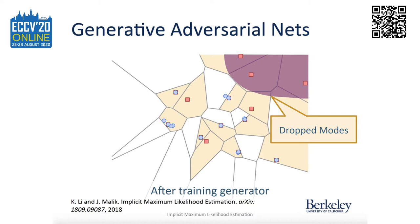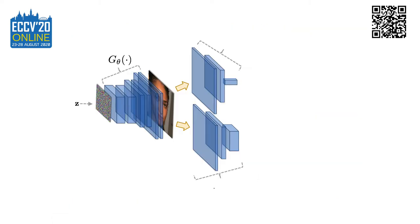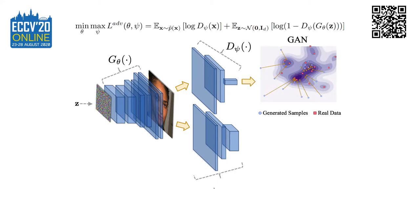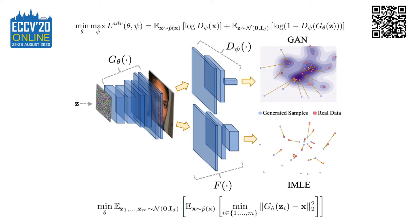This leads to generation bias against minority attributes. Why does it happen? GAN only cares about making each generated sample similar to some real data, while GAN does not care about whether real data is similar to any generated sample. Our method is proposed to compensate this downside of GAN by harmonizing adversarial and reconstructive generative models together, combining benefits of both: adversarial models generate realistic results, while reconstructive models guarantee data coverage.